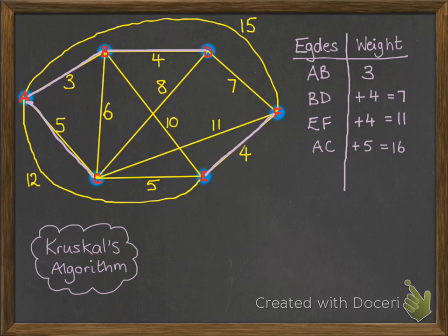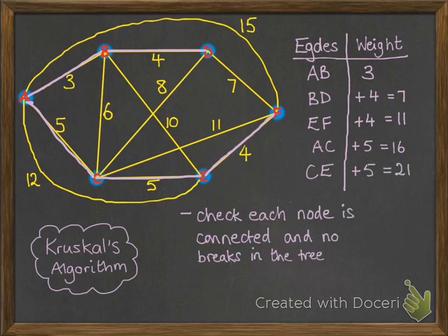Next, we are going to add in that 5. That's the next smallest, and it improves our connectivity. Now we've got all the nodes connected to each other, with a total weight of 21. At the end of this, you just need to check that every node is connected, that it's possible to get from any node to any other node, and there's no breaks in your tree.